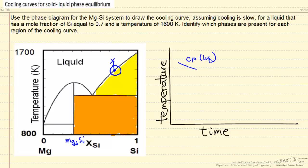At this point, which is close to 1600 Kelvin, we start making solid silicon in equilibrium with the liquid. As we continue to cool down, we make more solid silicon, and we change the composition of the liquid because we're removing just silicon from the liquid.